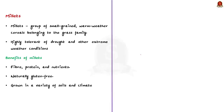What is a millet? Millets are a group of small-grained warm-weather cereals belonging to the grass family. They are cultivated annually. They are highly tolerant of drought and other extreme weather conditions and have a similar nutrient content to other major cereals.